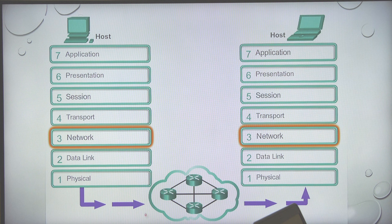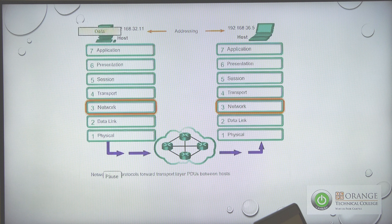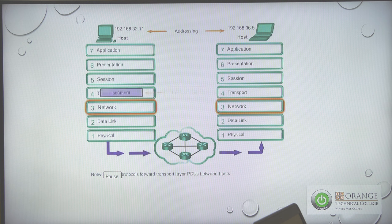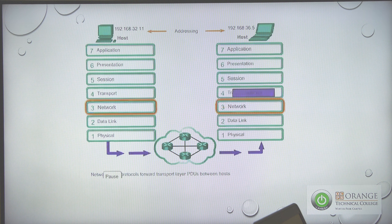This is straight from your curriculum. As data goes down the stack, at Layer 4 it gets encapsulated and becomes a segment, then at Layer 3 it becomes a packet, then at Layer 2 it becomes a frame. You must know that. It goes into the routing, comes back up as a frame, then a packet, then a segment, and then throughout the rest of the layers it's data.